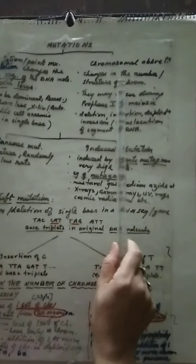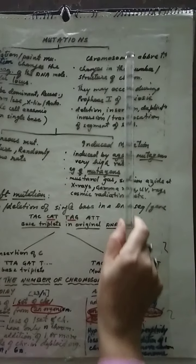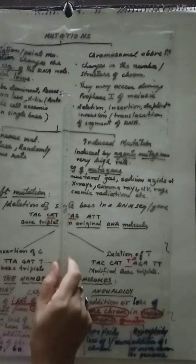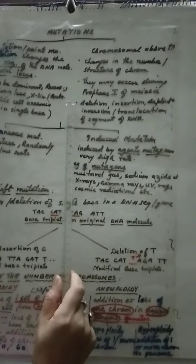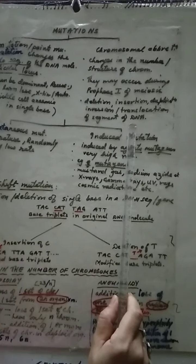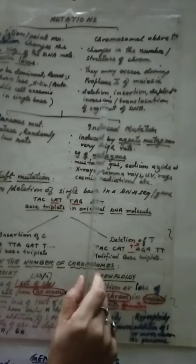Now what are chromosomal mutations? They are nothing but change in the number or structure of the chromosome. They may occur during prophase 1 of meiosis. Why? Because if you remember during anaphase when chromosomes are separating at that time they can be plus or minus. And we have studied these types of chromosomal aberration.